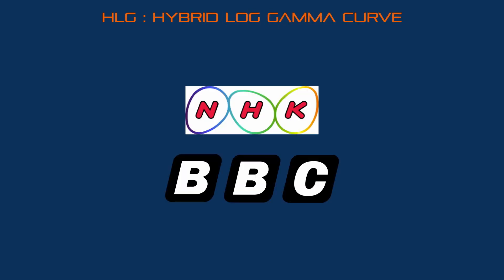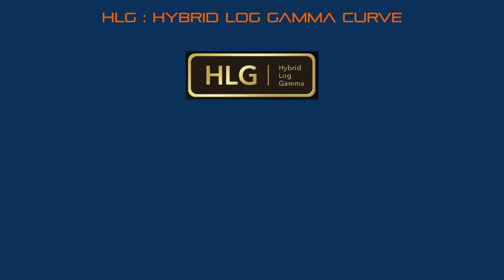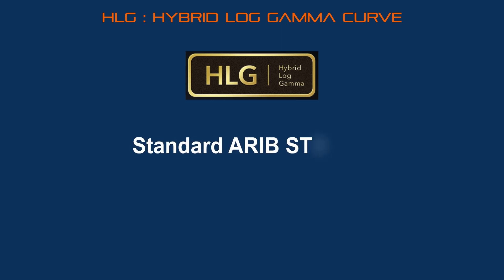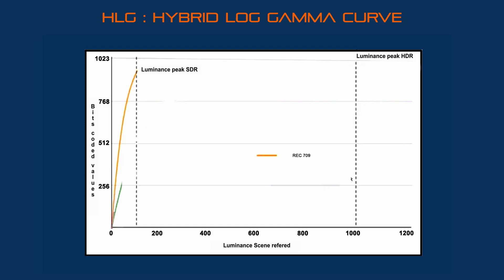We are going to talk about HLG, developed by BBC and NHK. It mainly concerns live content, sport events, music events, and globally everything broadcasted on TV. The curve is called Hybrid Log Gamma or HLG. From 0 to 100 nits it acts like a Rec. 709 gamma curve, and from 100 to 5000 nits it acts like a logarithmic curve.